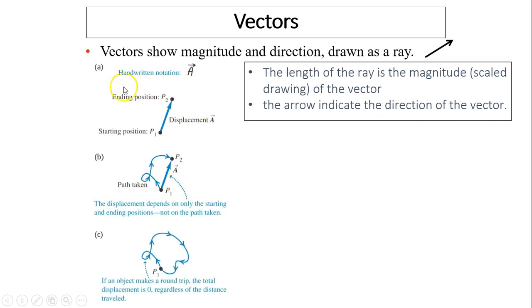So these are some properties. It's handwritten as a letter with an arrow on top. It has a starting position P1, an ending position P2. The direct distance is the size of the vector. And this vector can represent the displacement of A.